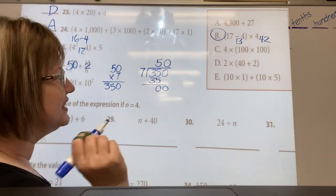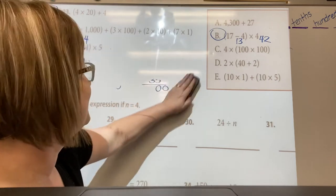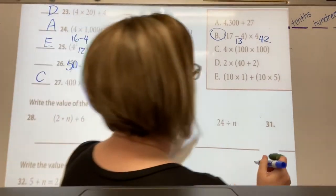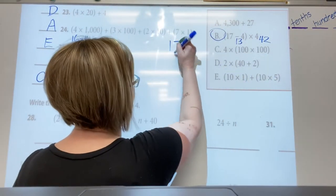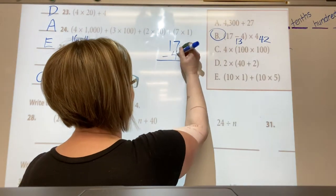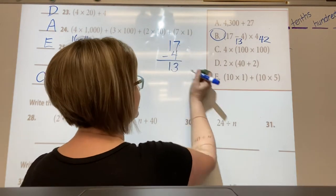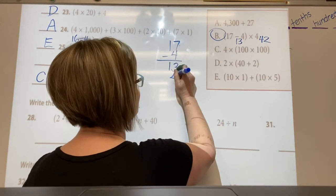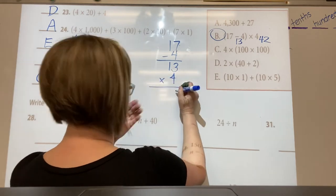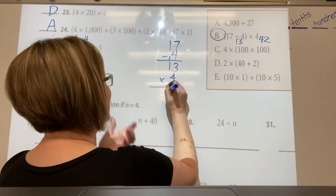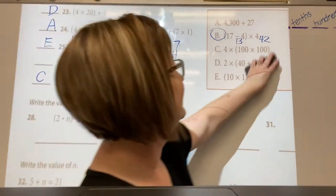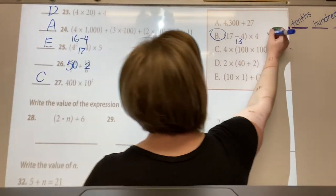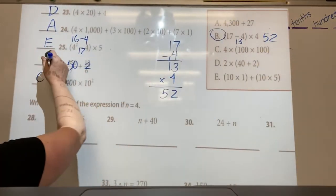So what did I do wrong over here? 17 minus 4 is 13, times 4 is not 52. Well maybe it is. Oh that's right, it's 52. Okay, figured it out.